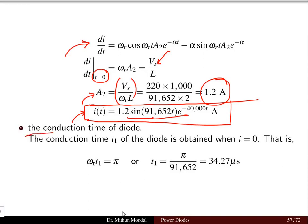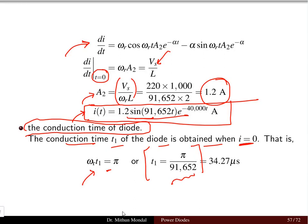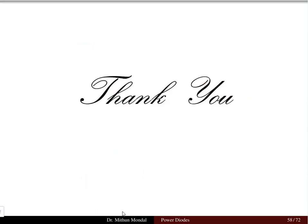The conduction time t1 of the diode is obtained when the current I becomes 0. Setting I = 0 gives ω_r·t1 = π, so t1 = π/ω_r = π/91,652 = 34.27 µs. This is the conduction time of the diode. This completes the lecture on the diode-switched RLC network. In the next lecture we will discuss the freewheeling diode and other devices. Thank you, see you in the next lecture.